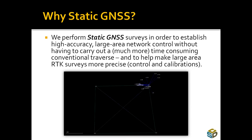We perform static GNSS surveys in order to establish high accuracy, large area network control without having to carry out the much more time-consuming conventional traverses. This can also aid in making our RTK surveys more precise because we can use the established control to set up our base receivers on. And if we need to perform a site calibration, we can establish some good tight control and maintain a good site calibration throughout the project.